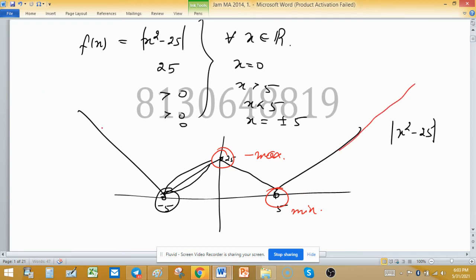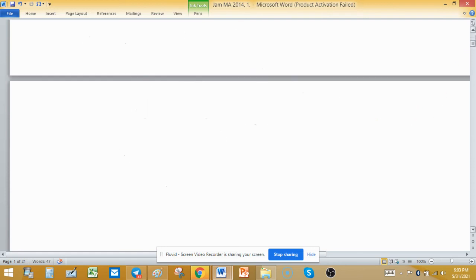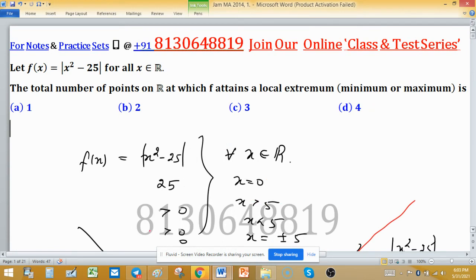Increasing in positive infinity and in minus infinity. So we have to find total numbers of points on R at which f attains a local extrema, so there are three points. So option C is correct.